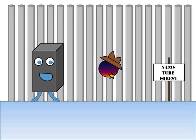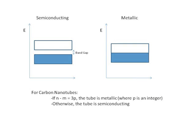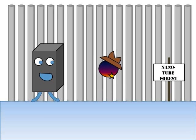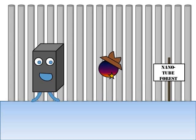Nanotubes can also conduct electricity, and the amount of conductivity they have depends on their structure because the structure is related to the band gap of the tube. Armchair nanotubes are always metallic. For tubes with small diameters, if N minus M is equal to 3 times an integer, the tube will be metallic; otherwise, the tube will be semiconducting. However, tubes with larger diameters — say greater than 3 nanometers — would generally always be metallic at room temperature because they are effectively more like graphene, which has zero band gap.